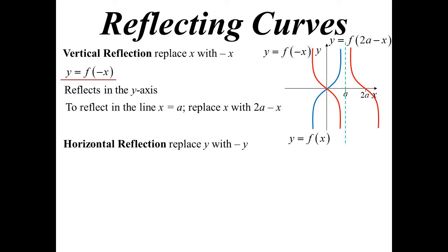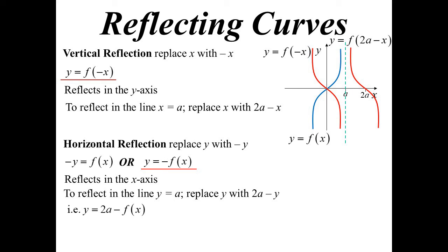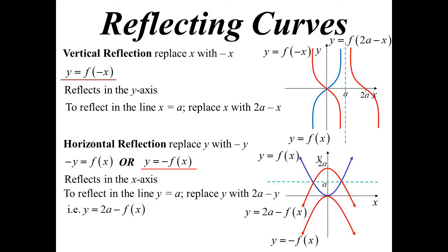You can do a similar thing horizontally. So replace the y with the negative y. So we get negative y equals function x, but again normally you see it written as y being the subject. So we're probably more likely to see it as y equals negative function x. That will reflect in the x-axis. If you want to reflect in a different horizontal line, then we'd replace it with two a minus y. So we get y equals two a minus function x. Let's say that's function x. Reflect it, shift it up to a units. And again have a look at the blue curve and where the red curve ended up, and you'll see that the axis of symmetry is at a. Always do reflection before translation. The order is actually important.